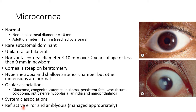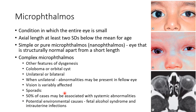It can be associated with refractive error and amblyopia, which should be managed appropriately. Now let us discuss about microophthalmos. It is a condition in which the entire eye is small with axial length at least 2 standard deviations below the mean for age.